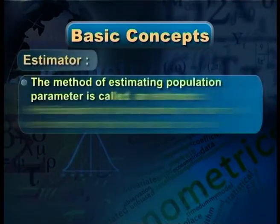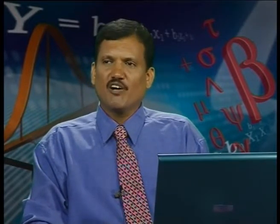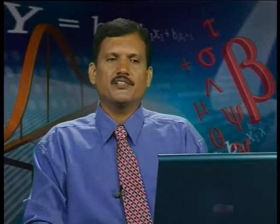Next, estimator. The method of estimating a population parameter is called an estimator. How do we arrive at the figure of 20,000? Based on the method of estimation. The methods of estimation generally available are sample mean or median. So the estimator here is sample mean or median. Based on the sample mean, we can estimate the actual value — that is the estimator.